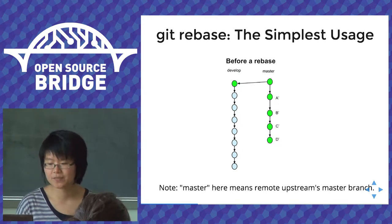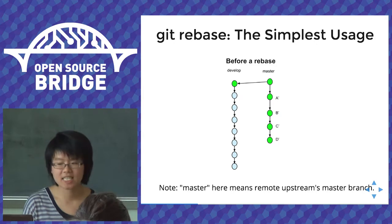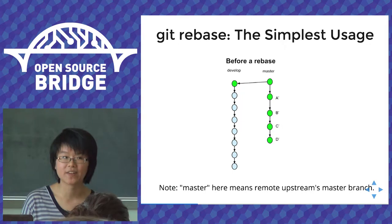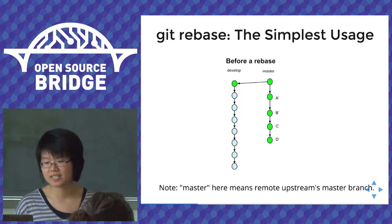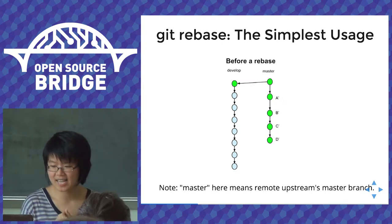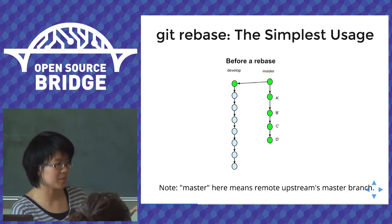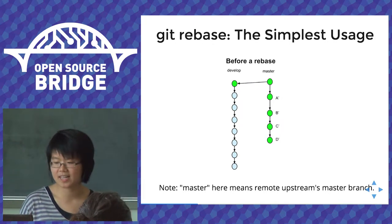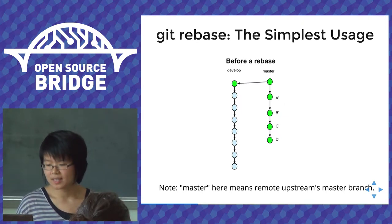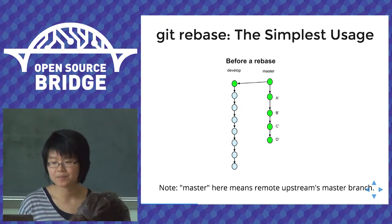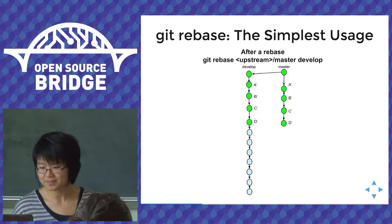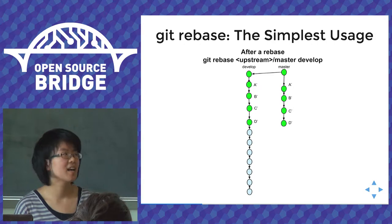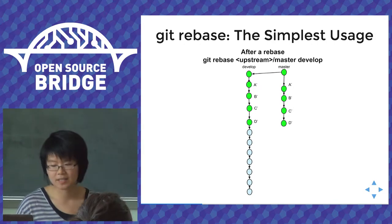To define some terms: master is the upstream branch where production software is released from. Other developers can have personal branches off master — in this case called 'develop' — which is supposed to be merged back into master once the work is done, reviewed, and tests pass. For the develop branch to be merged into master, all of master's commits — A prime, B prime, C prime, D prime — need to be copied onto the develop branch, resulting in a really linear history where all your commits are on top of the master commits.